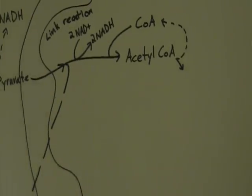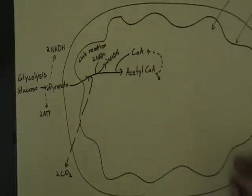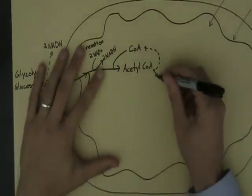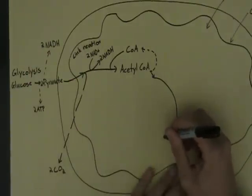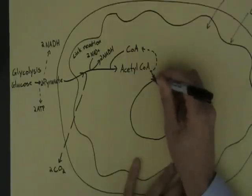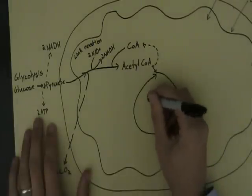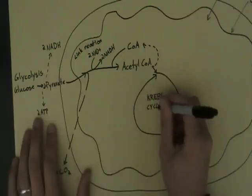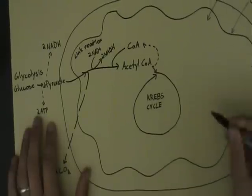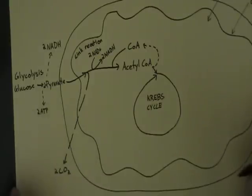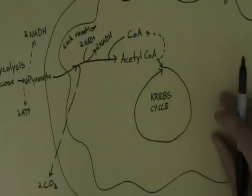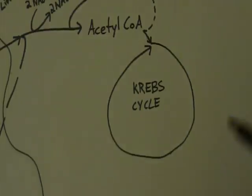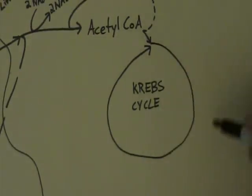So now we enter the Krebs cycle. The Krebs cycle, like the Calvin cycle, is a continuous series of reactions that go round and round. This is taking place in the matrix of the mitochondria. It's named after the guy who discovered it. It's sometimes also called the citric acid cycle because one of the molecules involved in this cycle is citric acid. You don't need to know the different compounds in the Krebs cycle — just know that it's a series of enzyme-catalyzed reactions going round and round.